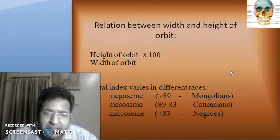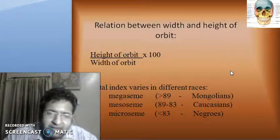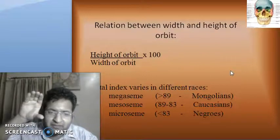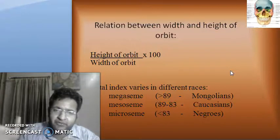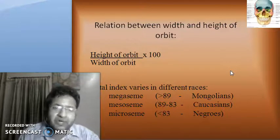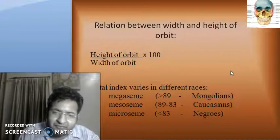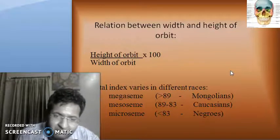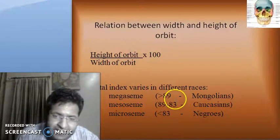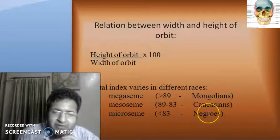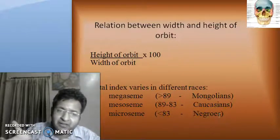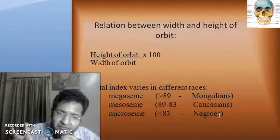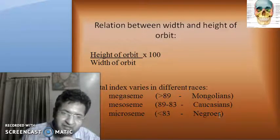The orbital index is the height of the orbit divided by the width of the orbit multiplied by 100. The orbital index varies with different races: Megaseme, that is more than 89, is seen in Mongolians; Mesoseme, 89 to 83, in Caucasians; and Microseme, less than 83, in Negroes. This is helpful in forensic analysis to determine racial origin.